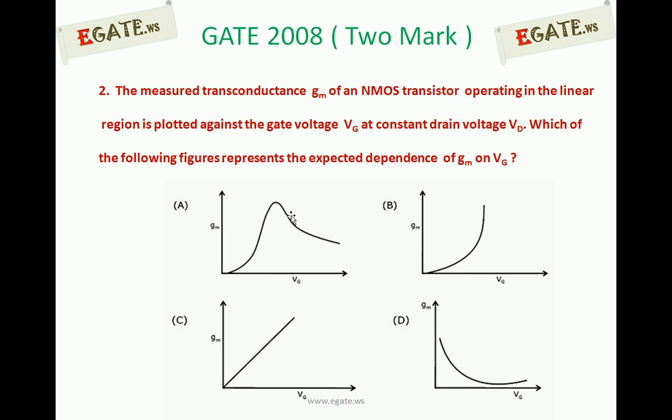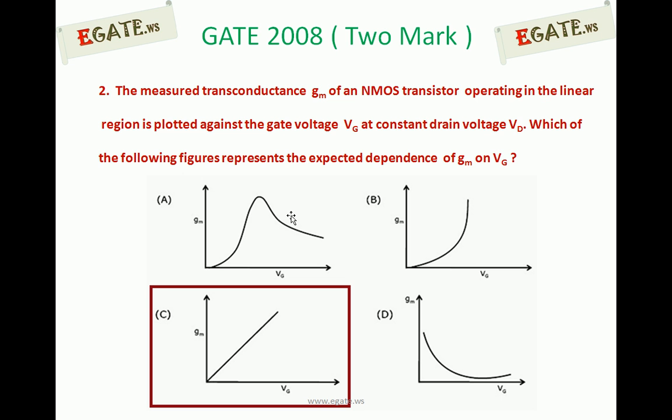The relation between gm and Vg when the NMOSFET is in the linear region—linear region is also called triode region. The correct answer for this one is C. Transconductance and Vgs are linearly related.